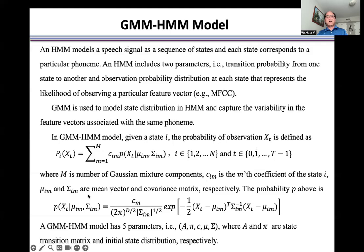μ_im and Σ_m are mean vector and covariance matrix respectively. The probability P here is expressed as this formulation.